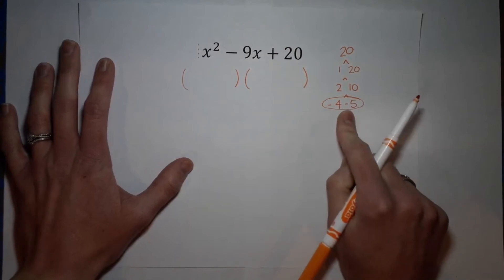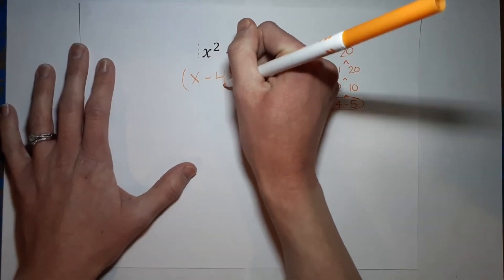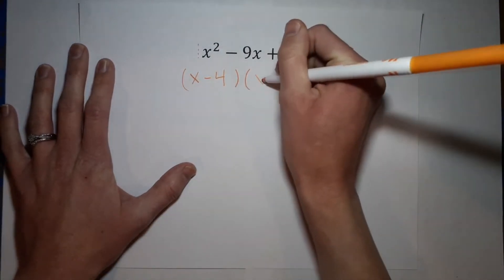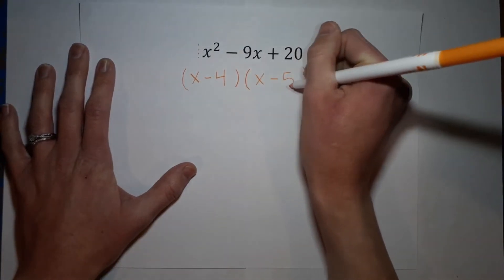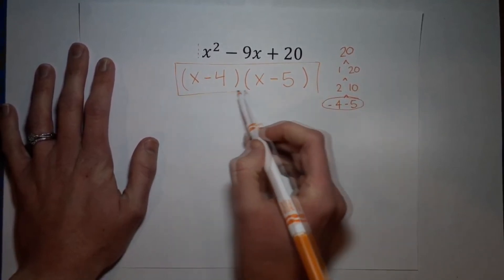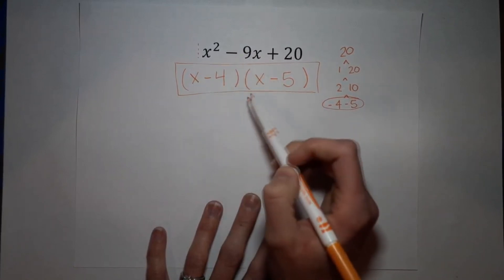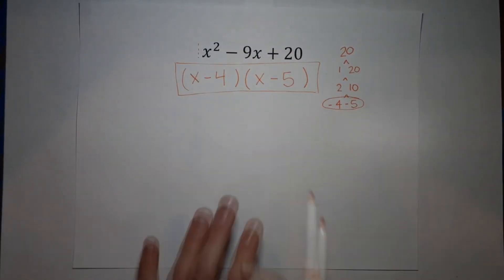So those are my two numbers. So now I'm going to have x minus four times x minus five. And that is the answer. You can always, always, always check yourself by just multiplying it back out and making sure that that is your answer. But that is it. You're done.